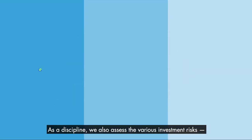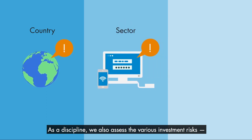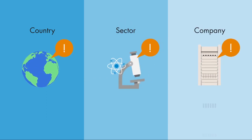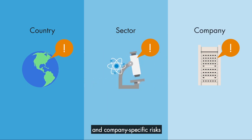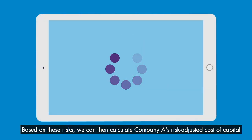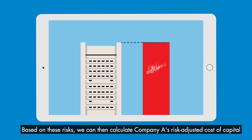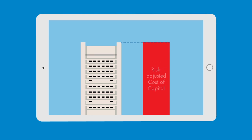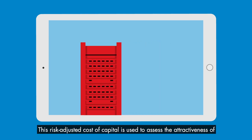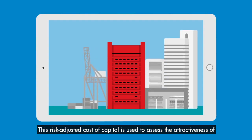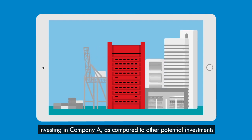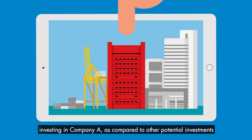As a discipline, we also assess the various investment risks. These include country, sector and company-specific risks. Based on these risks, we can then calculate Company A's risk-adjusted cost of capital. This risk-adjusted cost of capital is used to assess the attractiveness of investing in Company A as compared to other potential investments.